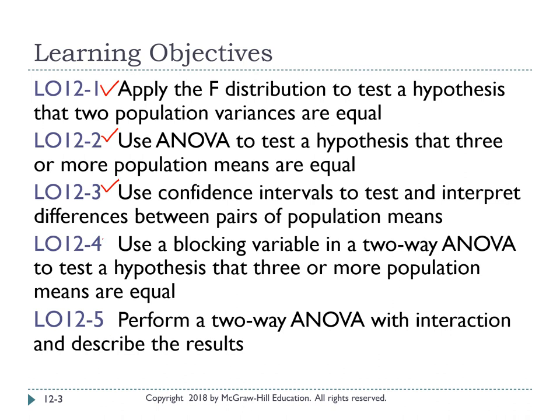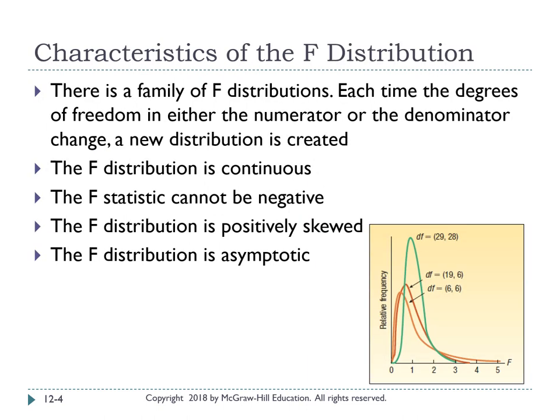The remaining two learning objectives will not be covered in this chapter. Analysis of variance, or ANOVA, will use the F distribution. We have learned about Z and T distributions; now we will learn about a new type of distribution called the F distribution.